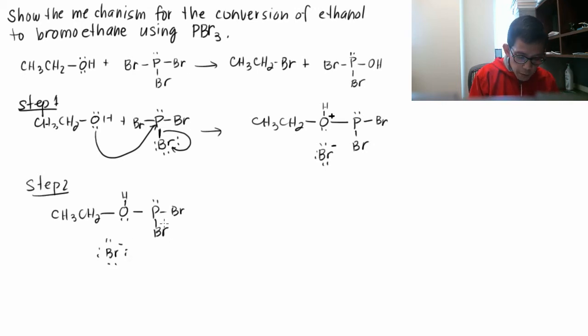So one of the lone pairs on the bromide attacks the carbon which is right next to the oxygen. And yeah, we do have a plus charge there. And what happens now is that bond between the carbon and the oxygen goes to oxygen as a second lone pair.